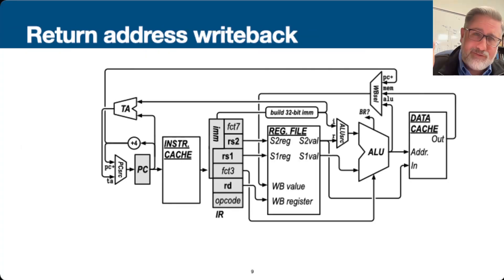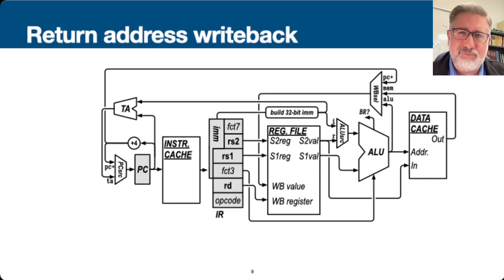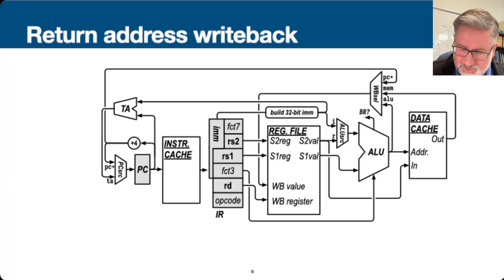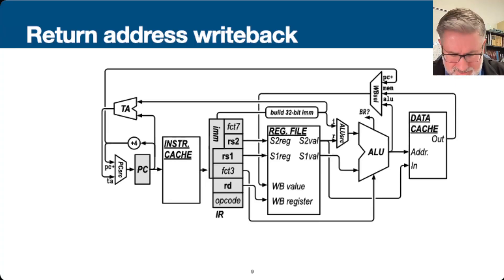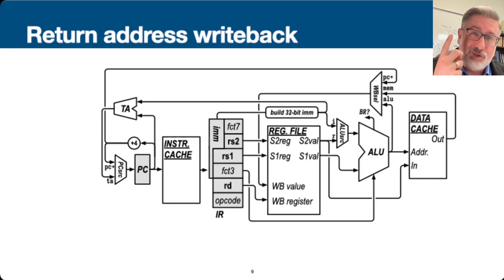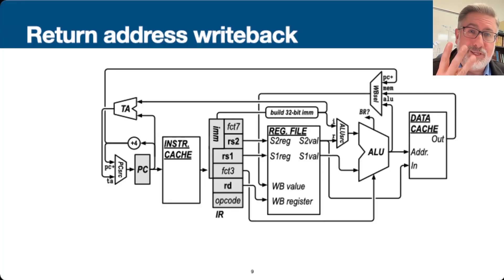That builds most of what the single cycle data path can do. A few things are still missing — like full immediate address construction, load upper immediate, fencing and system calls, and the exception vector table — but this covers the bulk of data processing, loading and storing, and making decisions.